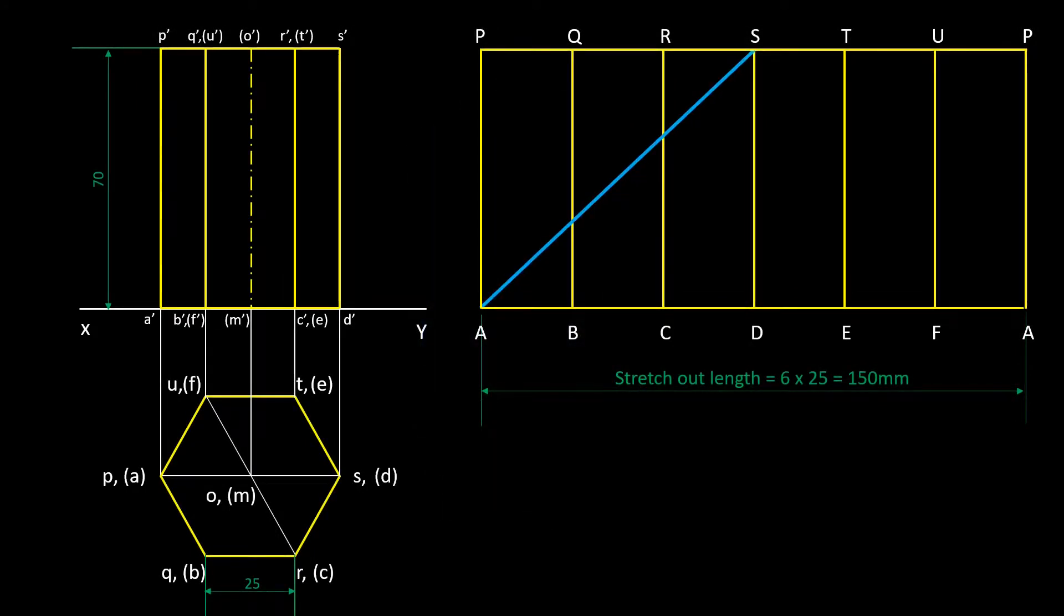There is one more shortest path possible as we have one more corner A on the pattern, which will be a straight line from corner A to S on the right side of the pattern.